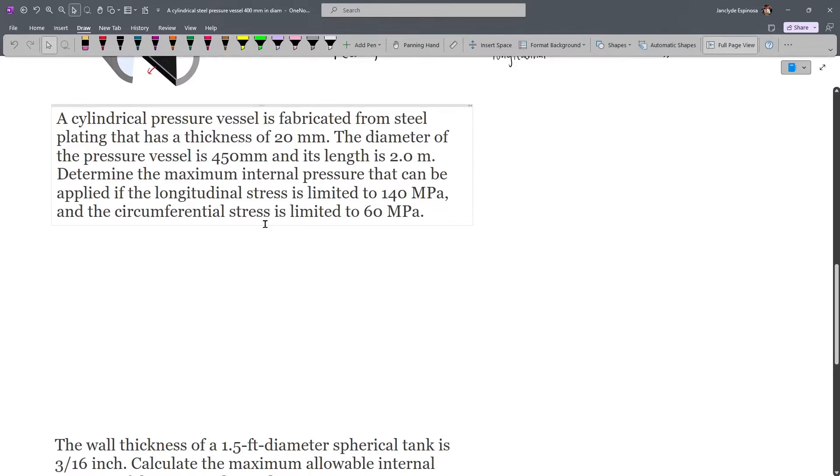We'll now move on to our next problem. We have a cylindrical pressure vessel which is fabricated from steel plating that has a thickness of 20mm. The diameter is 450mm and we are also given the length.